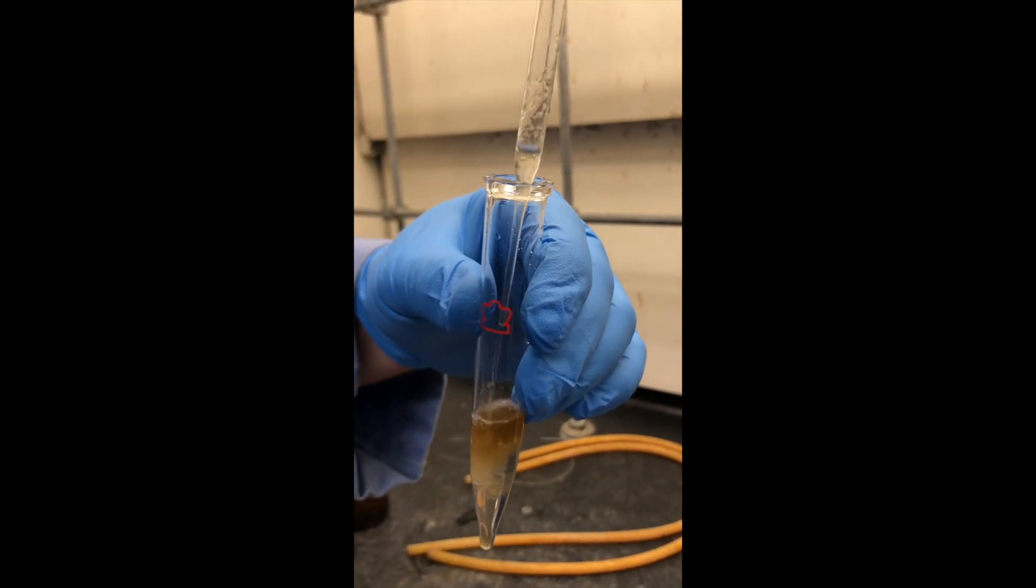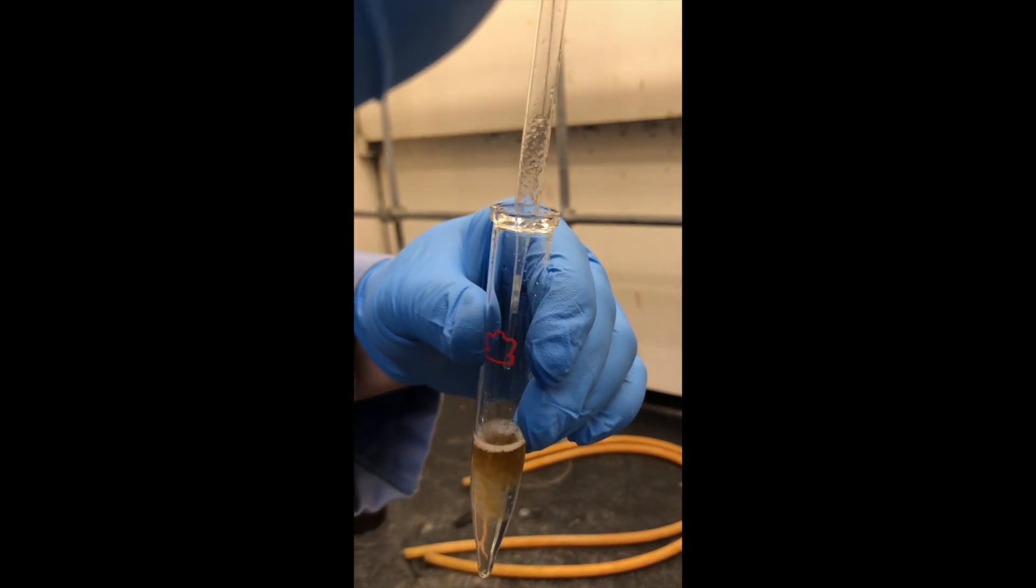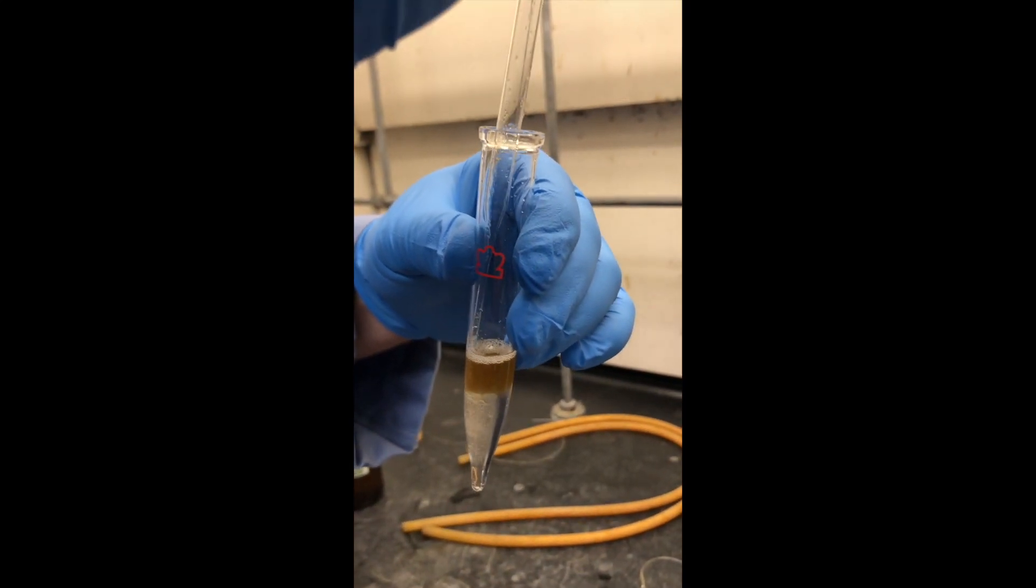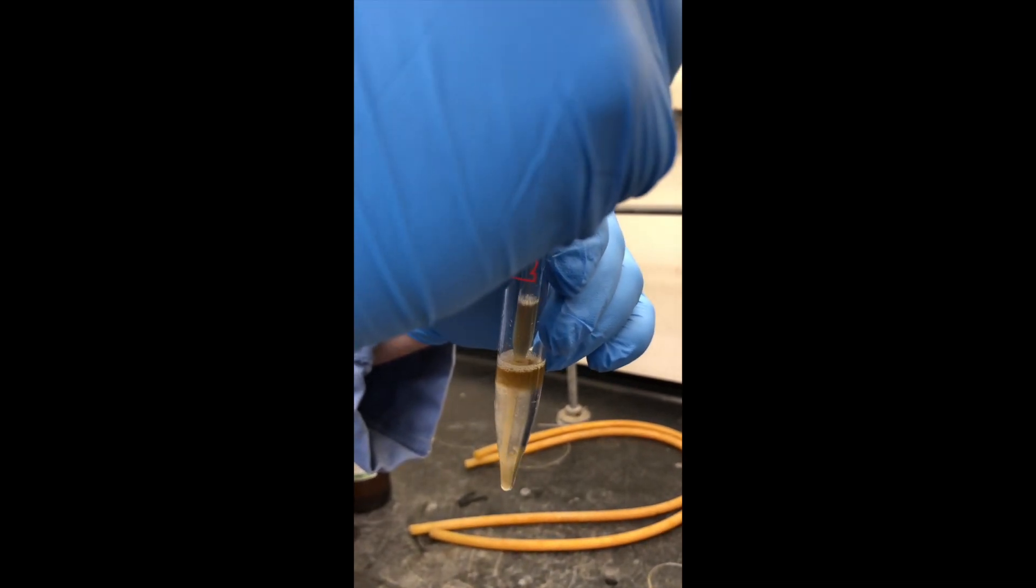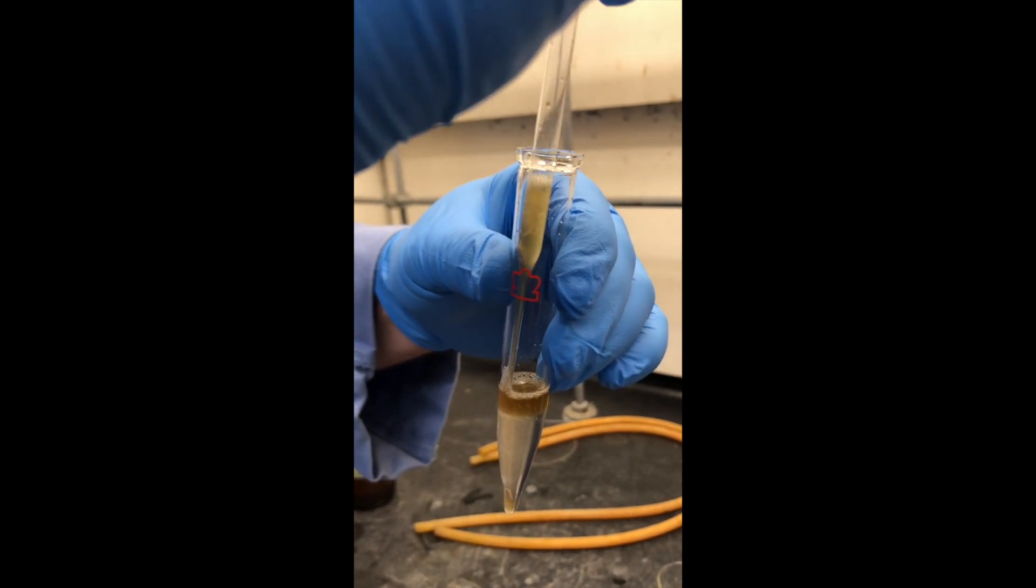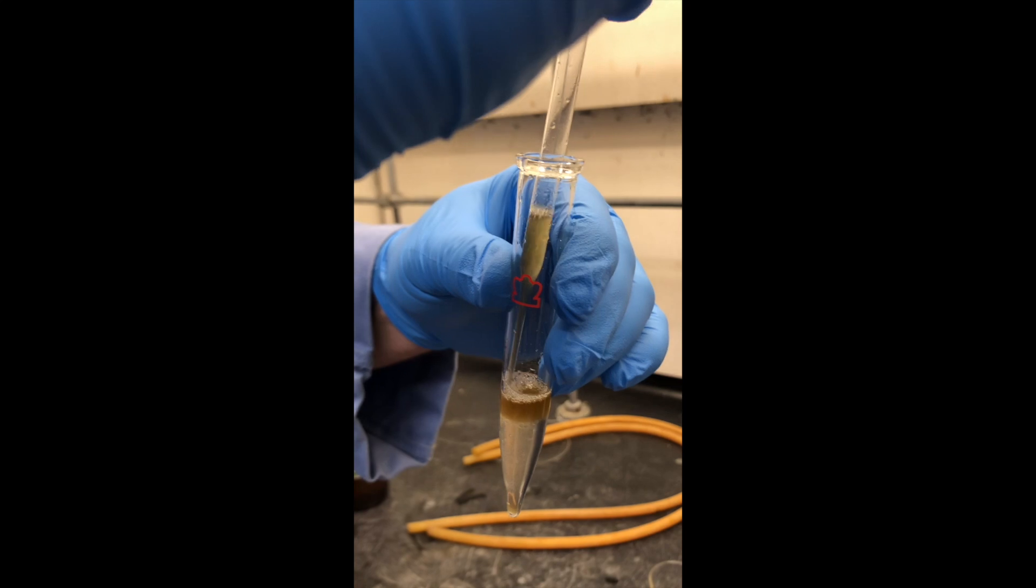So you can draw up the lower layer, drop it into the upper layer and do that a few times. Then you can draw the upper layer and expel it into the lower layer a few times. Luckily it's not making an emulsion. With E30 it doesn't make that much.